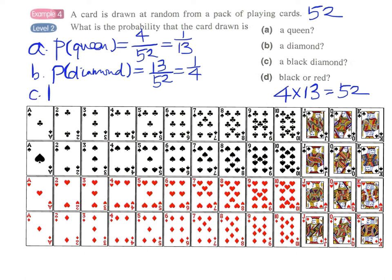And for part C, the probability of getting a black diamond. Again, denominator 52. And how many black diamonds are there? Diamond, black.